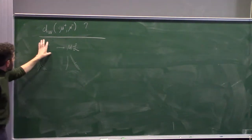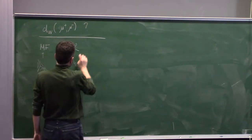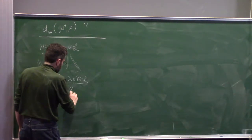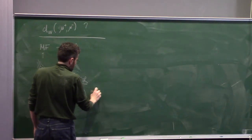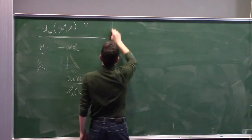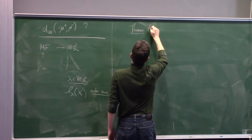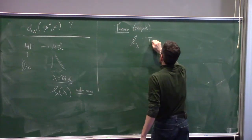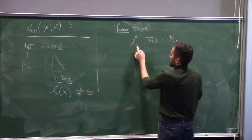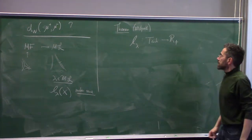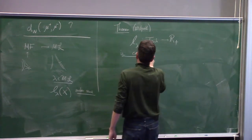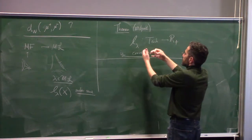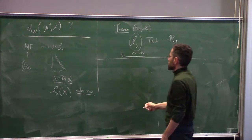It's a further theorem of Wolpert, relevant to all those theorems, that these length functions - the length of a measured lamination λ as a map from Teichmüller space to ℝ⁺ - this function is geodesically convex along Bay-Peterson geodesics. So it's a convex function along geodesics. That means you can study this function, and following the analogies around, you realize this is what you should look at.